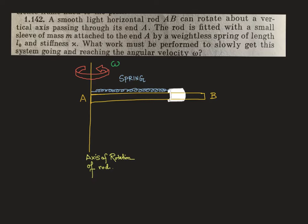The mass m, this is a sleeve of mass m, is attached to end A by a spring of constant chi. What work must be performed to slowly get this system going and reach angular velocity omega?